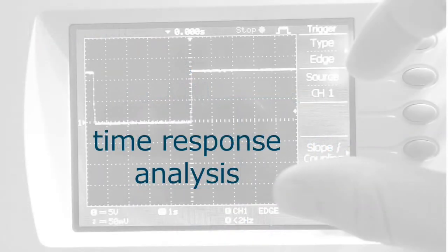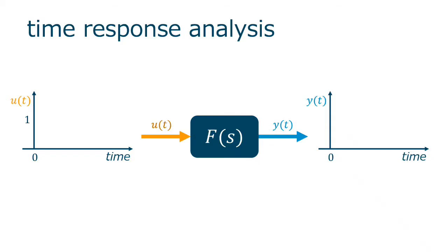Let us check the time response analysis of the first order system. The time response analysis consists in exciting the system with a test signal and observe its response. A common test signal is the step signal, as it is easy to apply. And then we analyze the system's response, that's the step response.